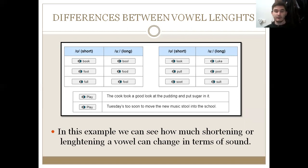And if you would go on to the sentences, we'd go: the cook took a good look at the pudding and put sugar in it. And for the other sentence, we would say Tuesday is too soon to move the new music into the school. You can see how much lengthening or shortening vowels can change your pronunciation of words.